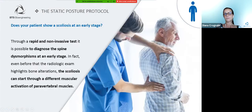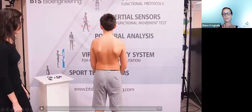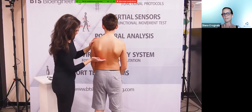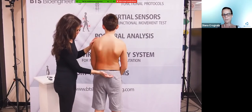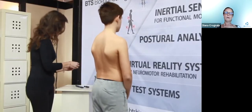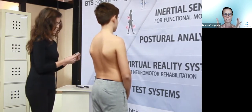Now let's move on to the next protocol: the static posture protocol. This protocol allows the evaluation of the muscular strategy used by the patient to maintain a static posture over time. The most common condition in which to perform the examination is the orthostatic posture, but the use of the protocol can be extended also for the assessment of any other posture in isometric conditions.